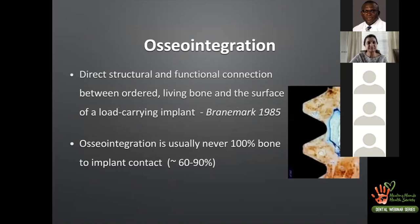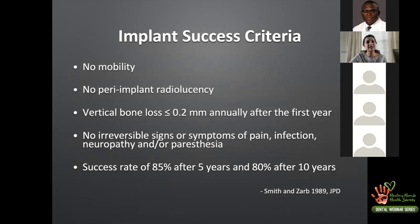Osseointegration — the process by which implants work — was defined by Brånemark in 1985 as a direct structural and functional connection between ordered living bone and the surface of a load-carrying implant. Osseointegration is typically 60–90%; it is never 100% bone-to-implant contact. The implant success criteria given by Smith and Zarb include: no mobility, no peri-implant radiolucency, vertical bone loss less than 0.2 mm annually after the first year, and absence of irreversible pain, infection, neuropathy, or paresthesia.